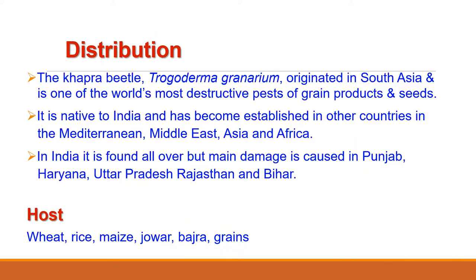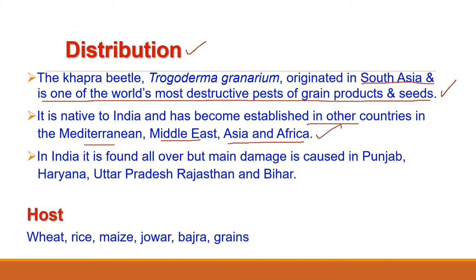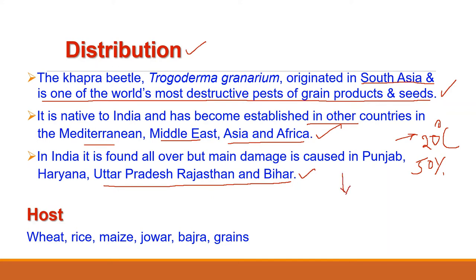Regarding its distribution, the khapra beetle, Trogoderma granarium, originated in South Asia and is one of the world's most destructive pests of grain, products and seeds. It is native to India and has become established in other countries in the Mediterranean, Middle East, Asia and Africa. This beetle is now almost cosmopolitan in distribution. It occurs in hot dry conditions, especially in areas which for at least four months of the year have a temperature greater than 20 degrees centigrade and relative humidity below 50%. In India, Uttar Pradesh, Haryana, Punjab, Bihar and Rajasthan are the states where stored wheat is badly damaged by this beetle.